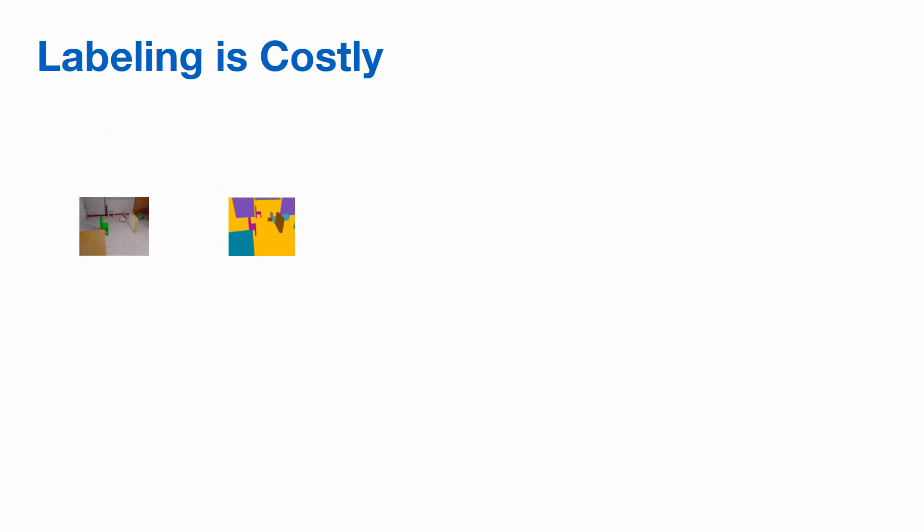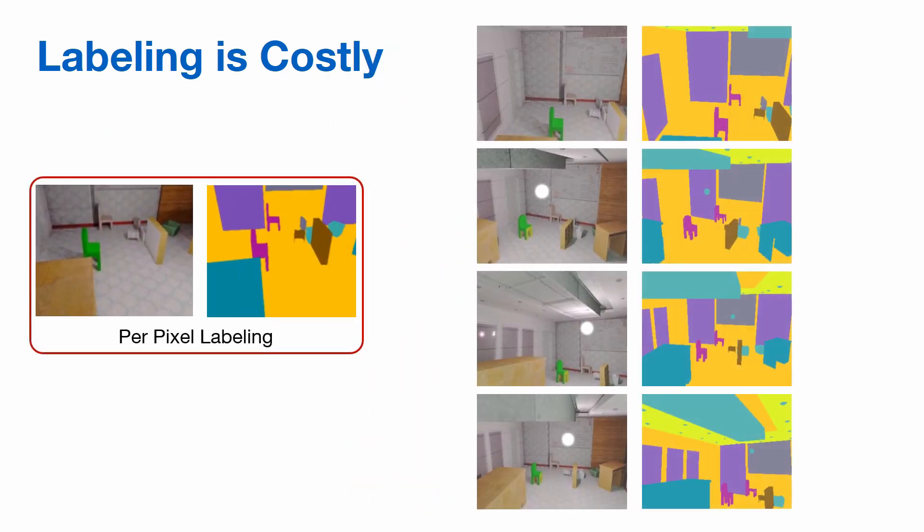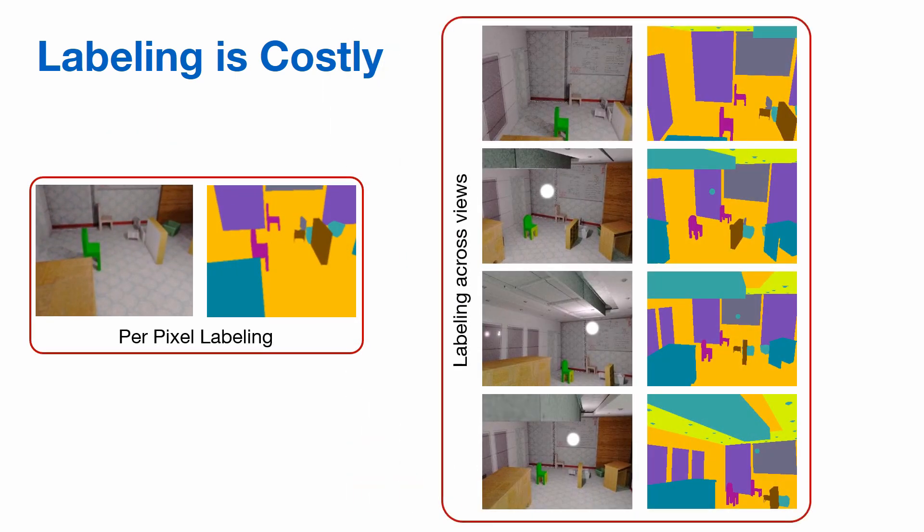However, labeling is costly, both in terms of time and effort involved. The cost is more pronounced in the case of semantic segmentation where every pixel in an image is associated with a label.